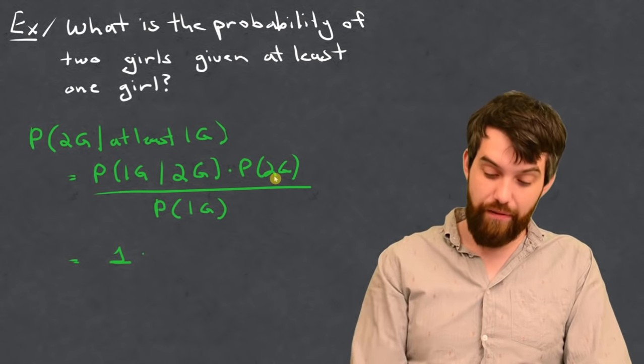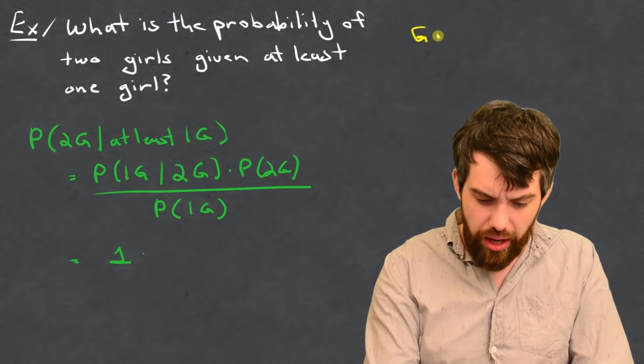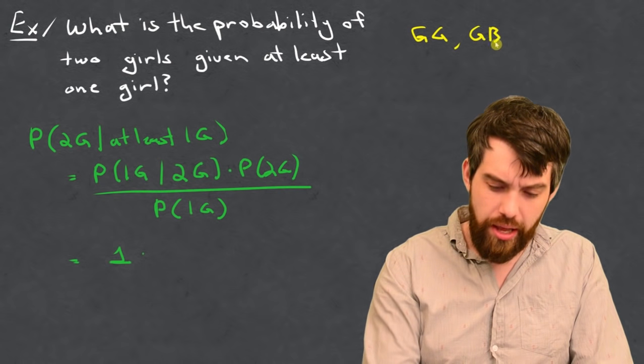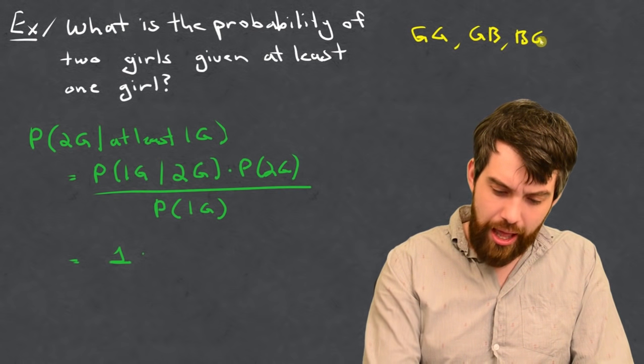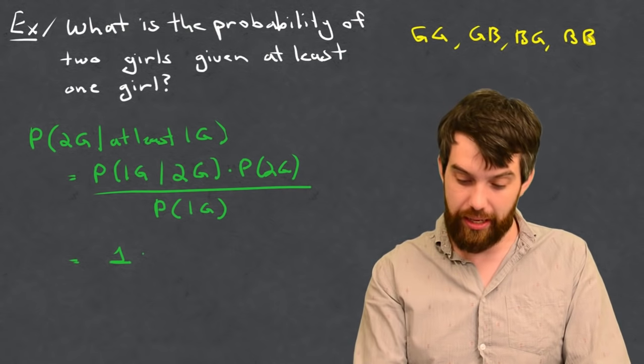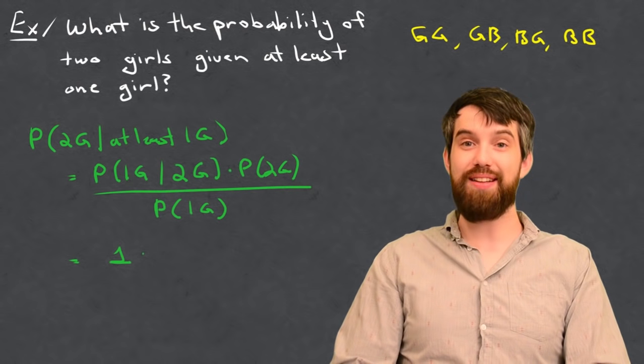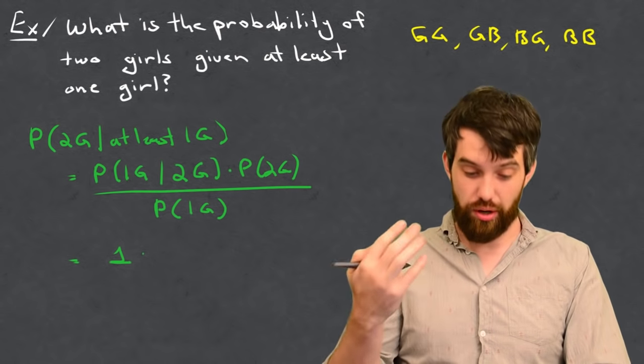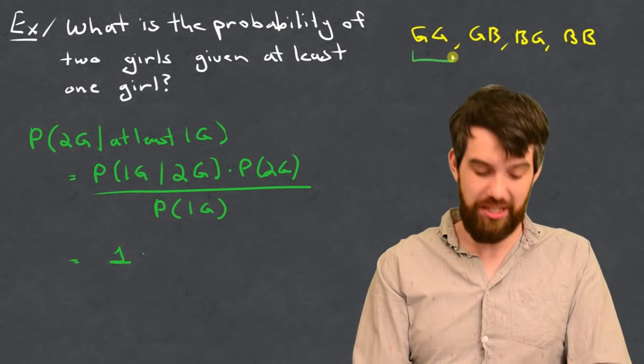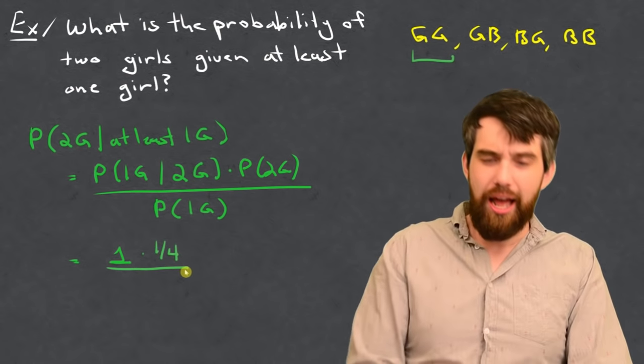What about the probability of there being two girls? Well, you might remember that the four cases are, you could have a girl-girl, you could have a girl-boy, you could have a boy-girl, and you could have a boy-boy. There were sort of four different sort of possibilities. But then, if we're going to investigate this, we want to investigate what's the probability of having two girls. Well, there's only one of those four possibilities, so this is just going to be the value of a quarter.